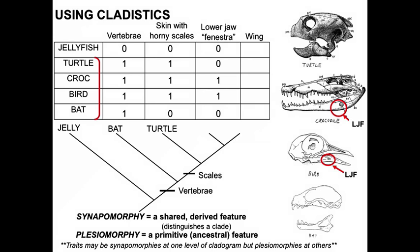If we look at turtles, crocs, and birds to put on our tree — turtles don't have the lower jaw fenestra, they have a zero there. So we're going to want to put the crocs and the birds together in a clade sharing a common ancestor, grouping them by that lower jaw fenestra. The turtles come out before that feature. So now we've used these characters, mapped the character states onto a table, and figured out their relationships.